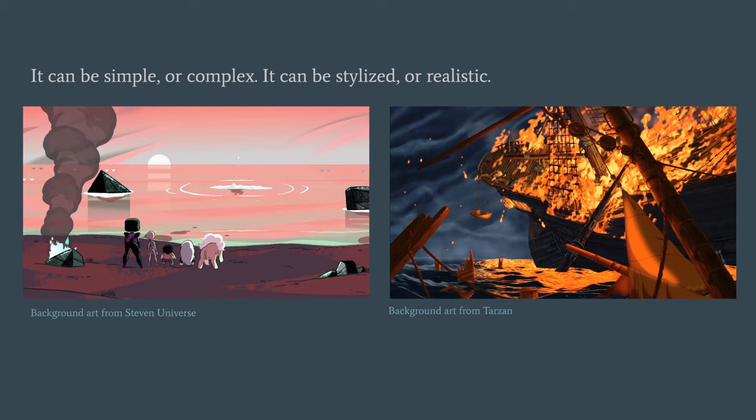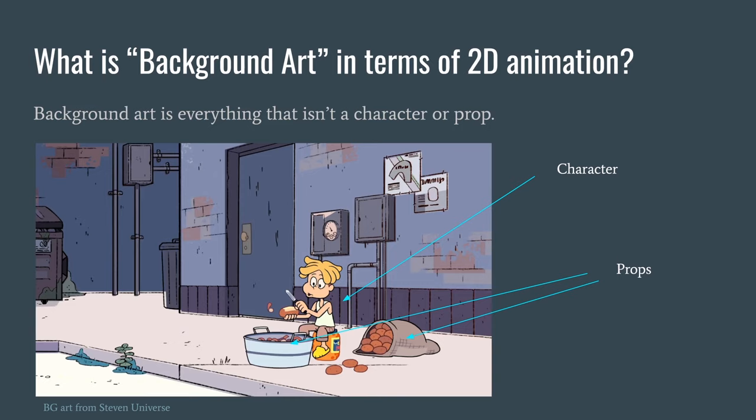Background art can be a huge variety of things — simple or complex, stylized or realistic. Here are two examples: a background from Steven Universe on the left, which is more stylized, graphic, and simple, and background art from Tarzan on the right, super detailed with animated flames and a 3D animated ocean. Both are equally background art — just two totally different ways of approaching it.